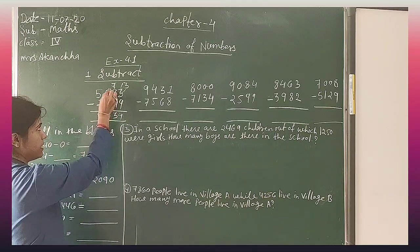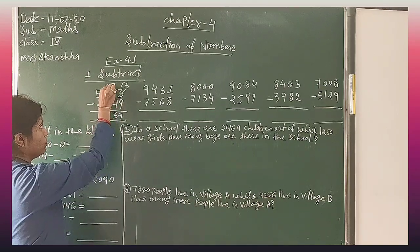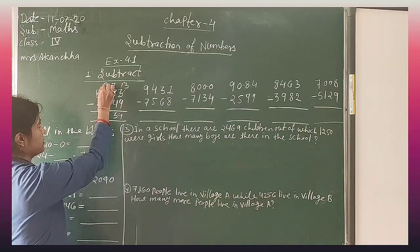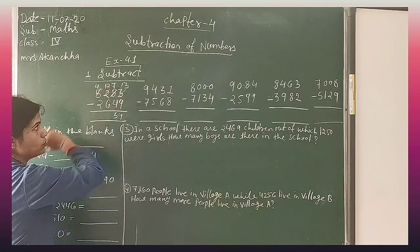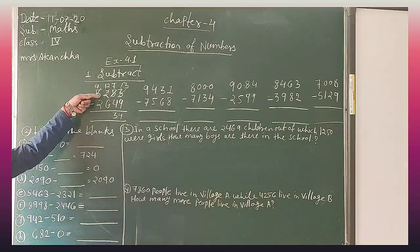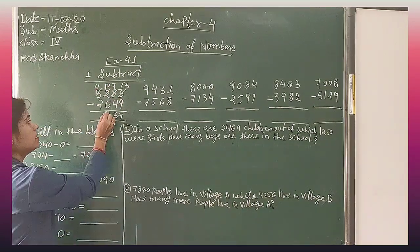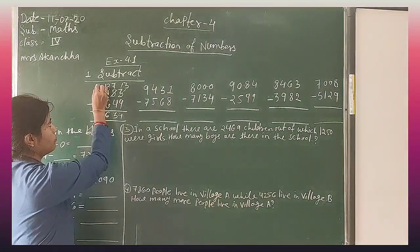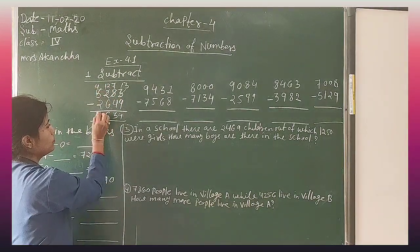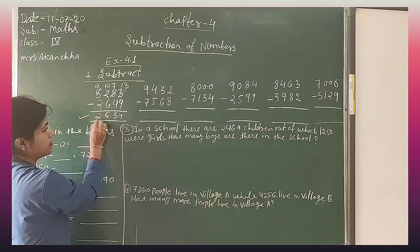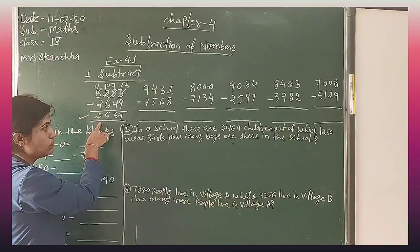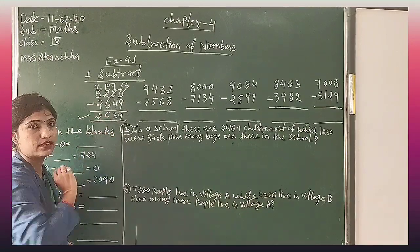2 minus 6 — again borrow. Now 12. 12 minus 6 is 6. 4 minus 2 is 2. This is your answer: 2634.